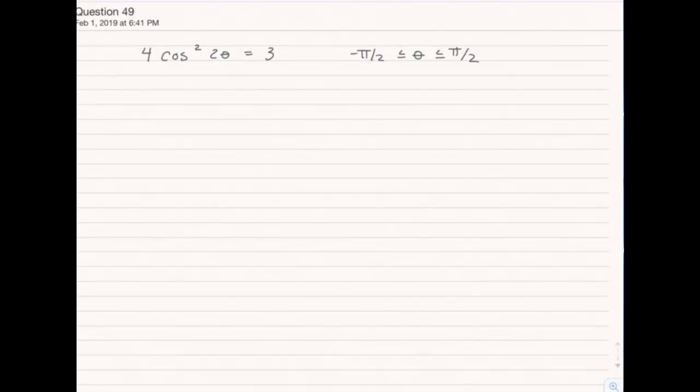The range we've been given is in terms of theta, but we need it in terms of 2 theta. So we're going to multiply all three of these terms by 2. So now we know we're looking between negative pi and positive pi.